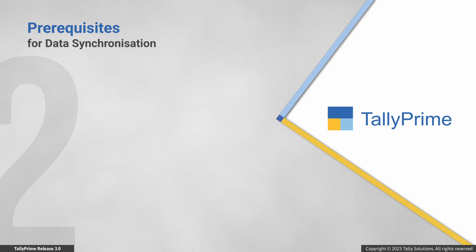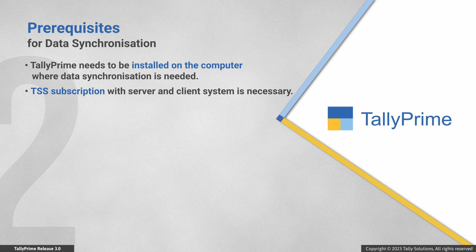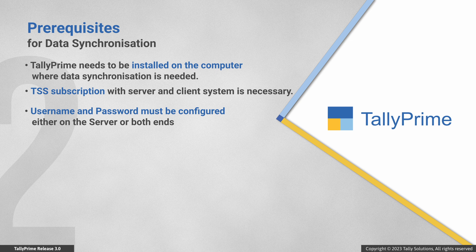You can also ensure that your company data in both companies is synchronized and updated immediately after you save any master or transaction. There are some prerequisites for data synchronization. The first and foremost prerequisite is that Tally Prime must be installed on the site that wants to update the company data. Moreover, server and client — or head office and branch office — must have a valid Tally Software Services or TSS subscription.